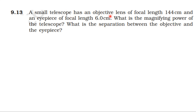We have a telescope with an objective lens and an eye lens. The objective lens has a focal length of 144 cm and the eyepiece has a focal length of 6 cm. We need to find the magnifying power of the telescope and the distance between the two lenses.